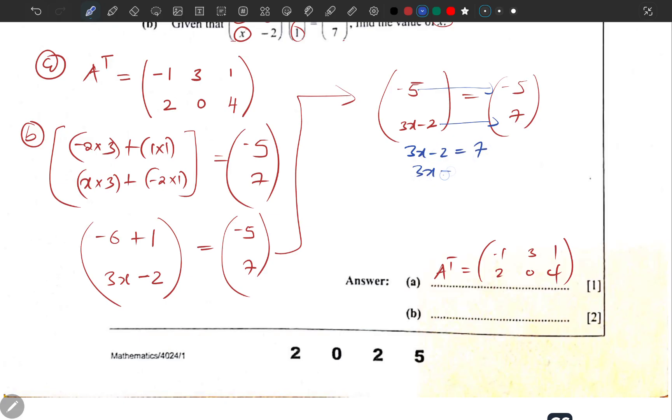So 3x = 7 + 2, meaning 3x = 9. Divide by 3, and x = 3. You come here and report: x = 3.